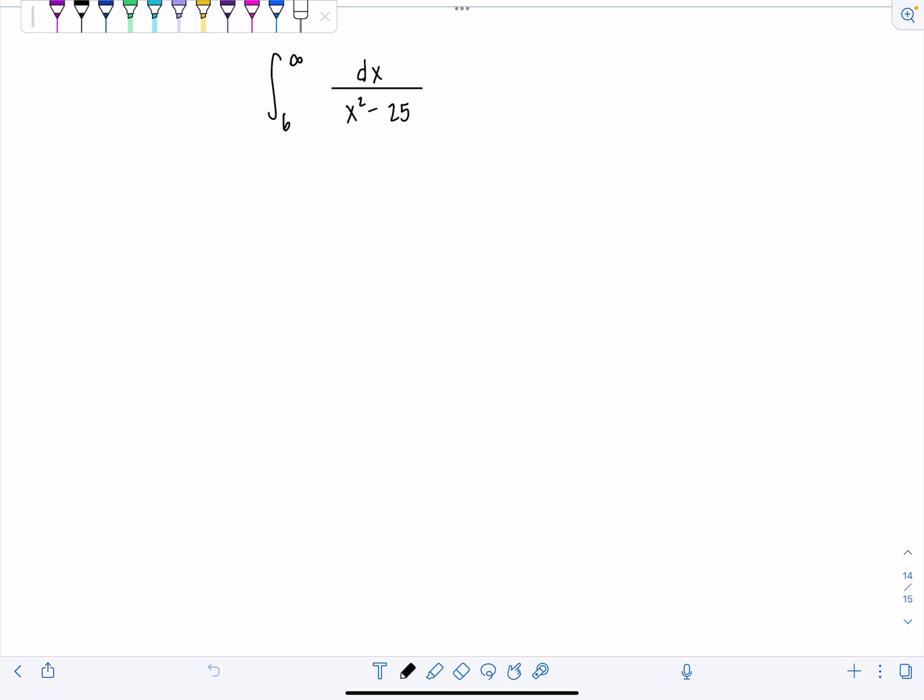We have here integral from 6 to infinity of 1 over x squared minus 25 dx. So right away you should notice this is an improper integral based on the limits of integration. So we need to rewrite it immediately as the limit as t approaches infinity of the integral from 6 to t, dx over x squared minus 25.